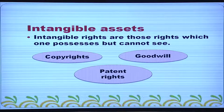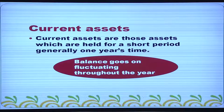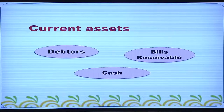Intangible rights are those rights which one possesses but cannot see — copyrights, goodwill, patent rights, etc. are intangible assets. Current assets are those assets which are held for a short period, usually one year. The balance of current assets goes on fluctuating throughout the year. Debtors, bills receivable, cash, etc. can be called as current assets.